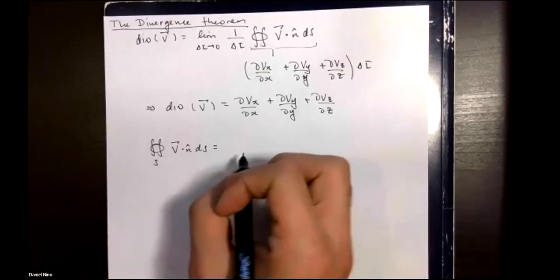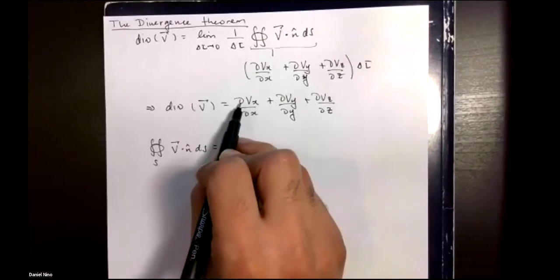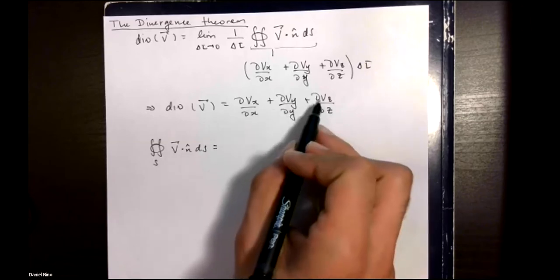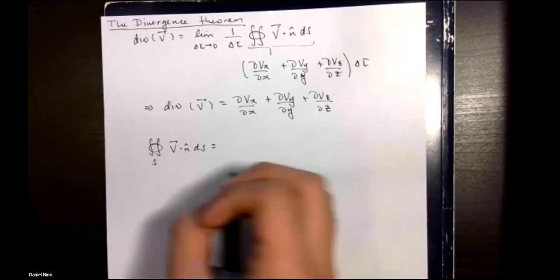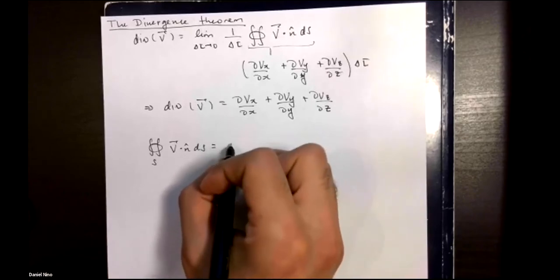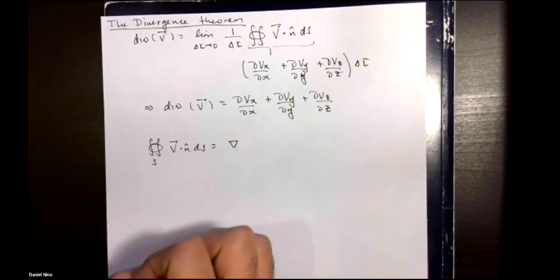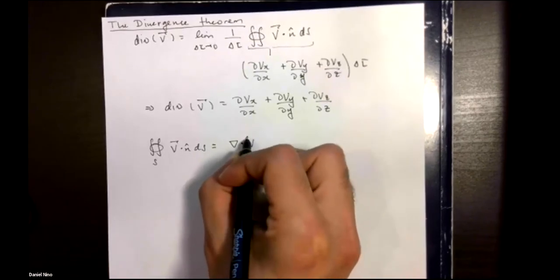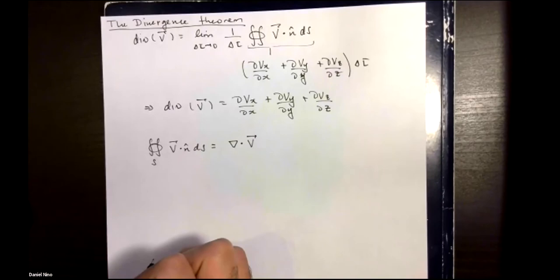If you notice, you get the same pattern of partial derivative with respect to x plus partial derivative with respect to y plus partial derivative with respect to z. This should remind you of the gradient operator that we saw before and the dot product with our vector field v.